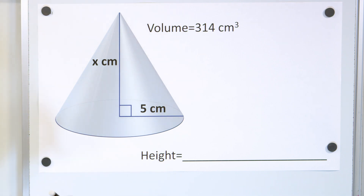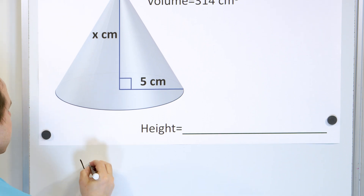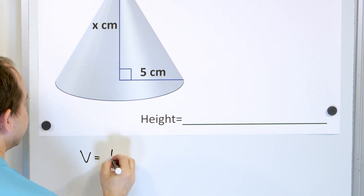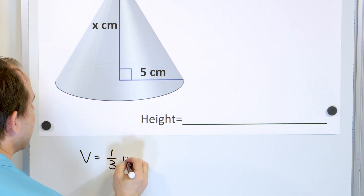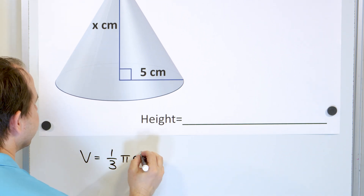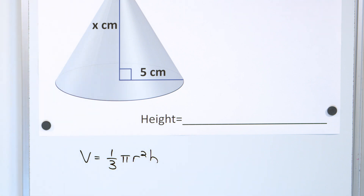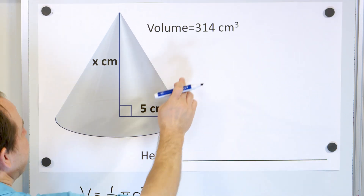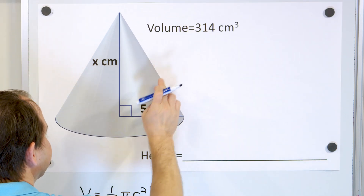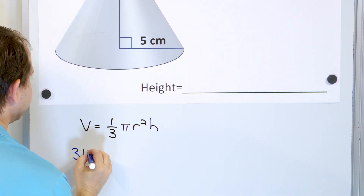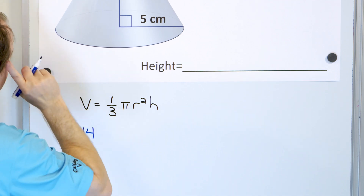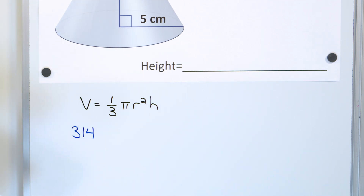Don't forget what the volume of a cone actually is, because it's the same equation we're going to use. The volume is one-third times pi times r squared times h. This is the same equation we've used all along. So now we need to put the information in. We know the volume is 314 cubic centimeters. We'll just remember that we're working in centimeters.